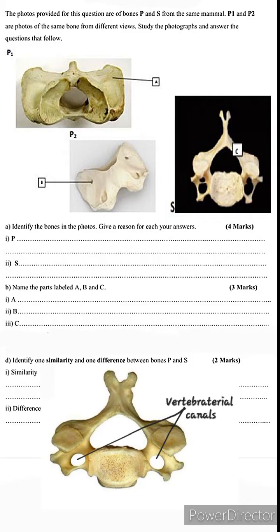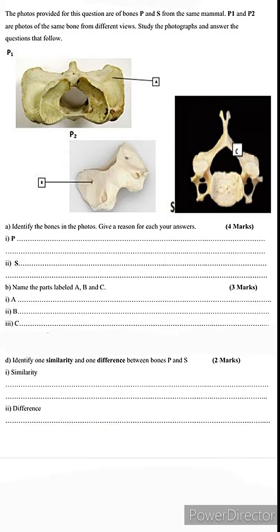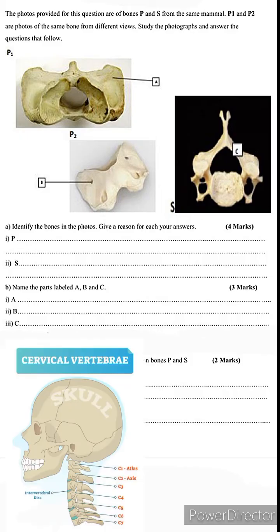Whenever you see a bone having this feature, you should know automatically this is a cervical vertebra. The bones we have here are cervical vertebrae. Cervical vertebrae are seven in number. The first two have unique features, then the remaining five share certain characteristics in common with the others.